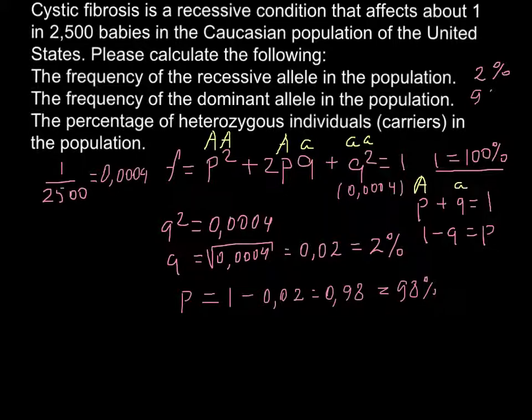So we answered the second question: 98%. The last question is the percentage of heterozygous individuals or carriers in the population. We just need to use this part of the formula. Heterozygous would be 2 times p times q, so 2 × 0.02 × 0.98.